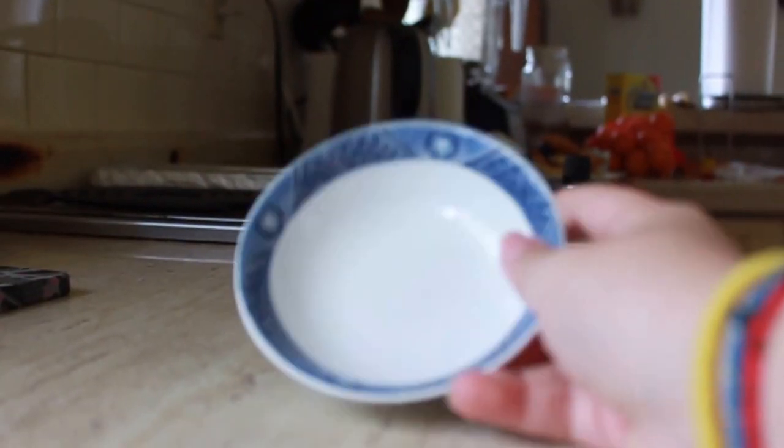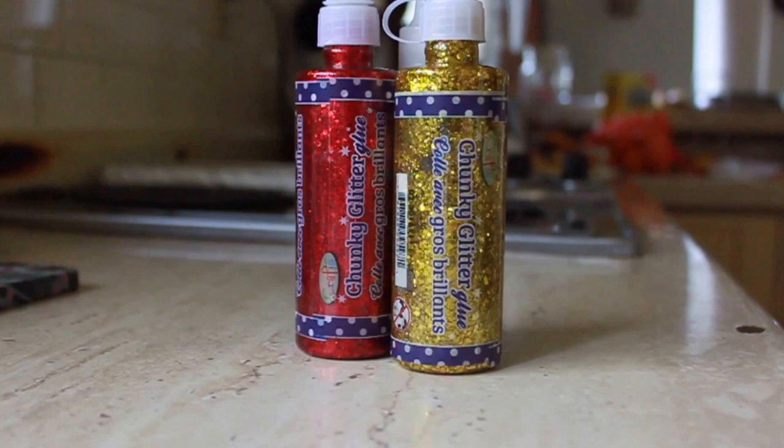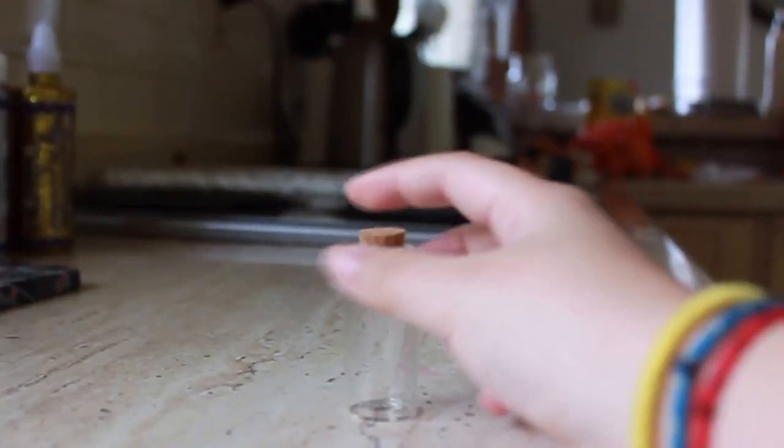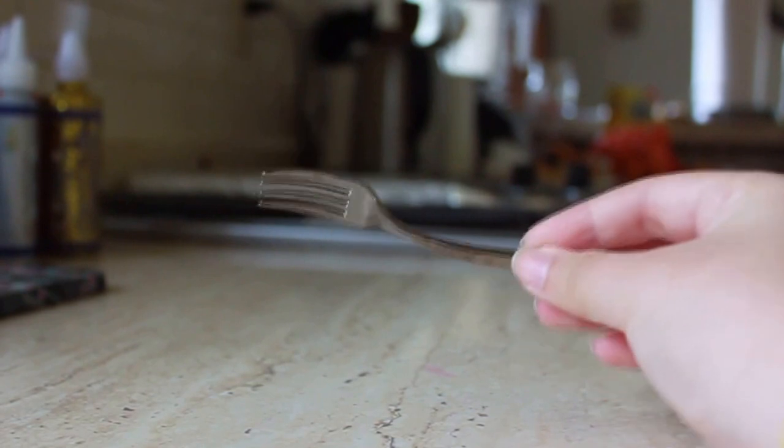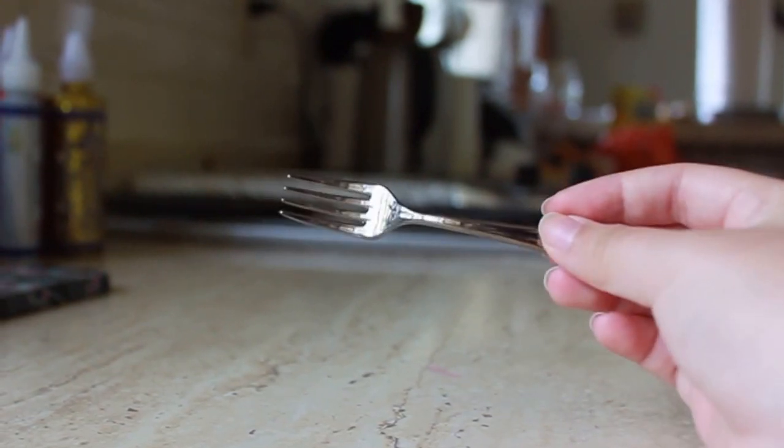A small bowl you can use to mix everything in, some glitter, of course your glass bottle and it should also come with a cork, a toothpick or a small fork which you can mix everything with.